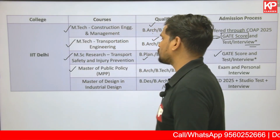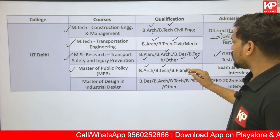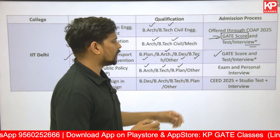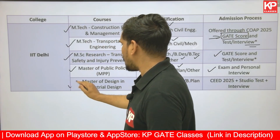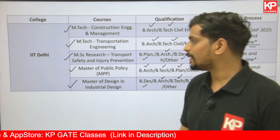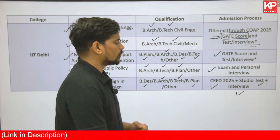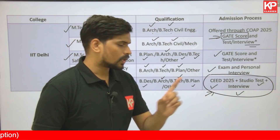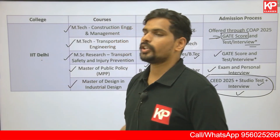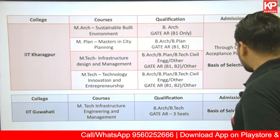Masters of Public Policy at IIT Delhi is an interdisciplinary course open to B.Arch, B.Tech Civil and other engineering graduates, as well as B.Plan graduates. Selection is based on an exam and personal interview as per the official brochure. The M.Design course is not through GATE, but B.Design, B.Arch, B.Tech, and B.Plan graduates are eligible. Selection is based on CEED examination, studio test, and interview — so B.Plan graduates who have qualified CEED 2025 can apply.